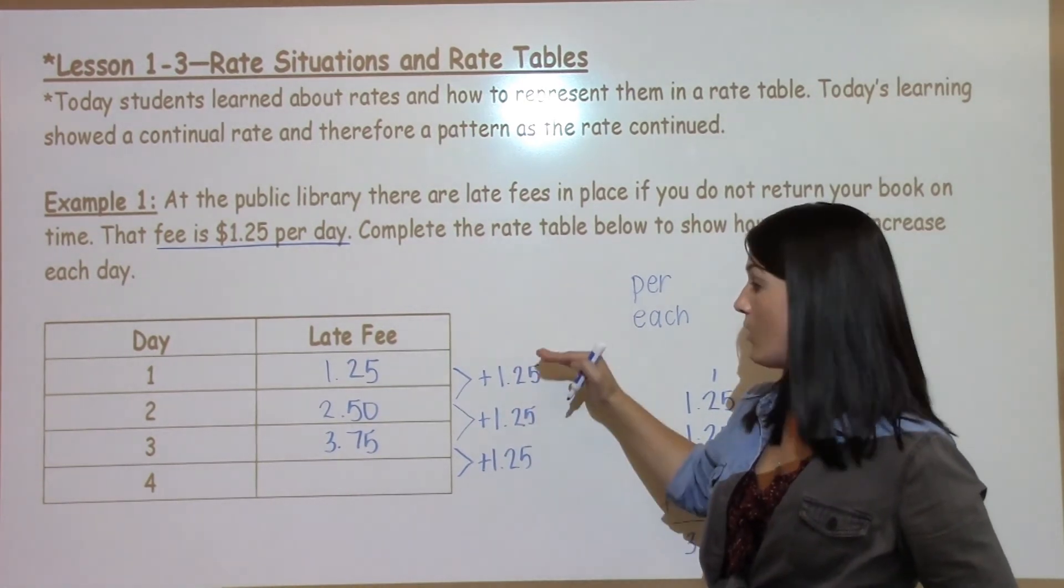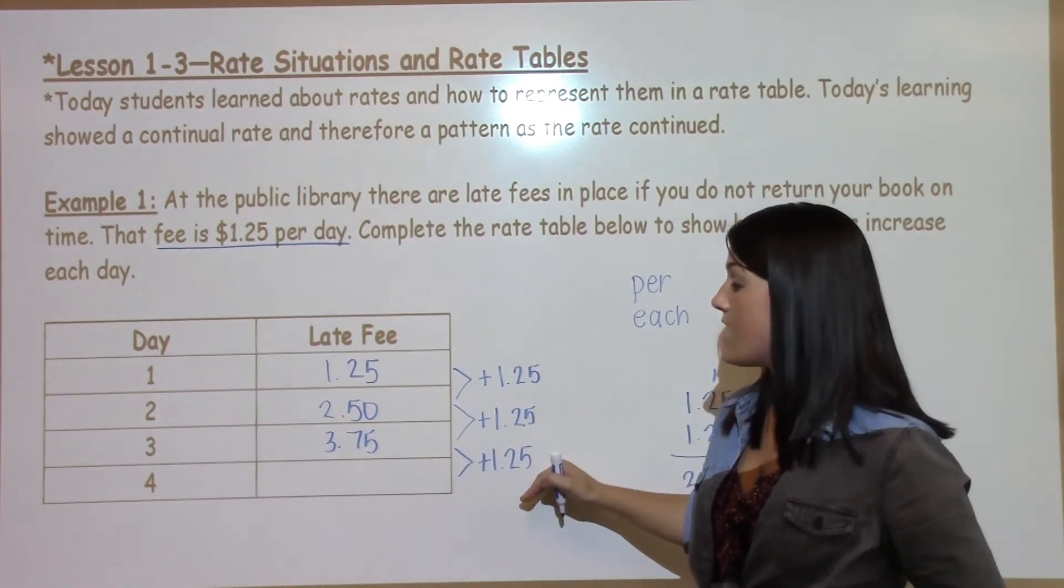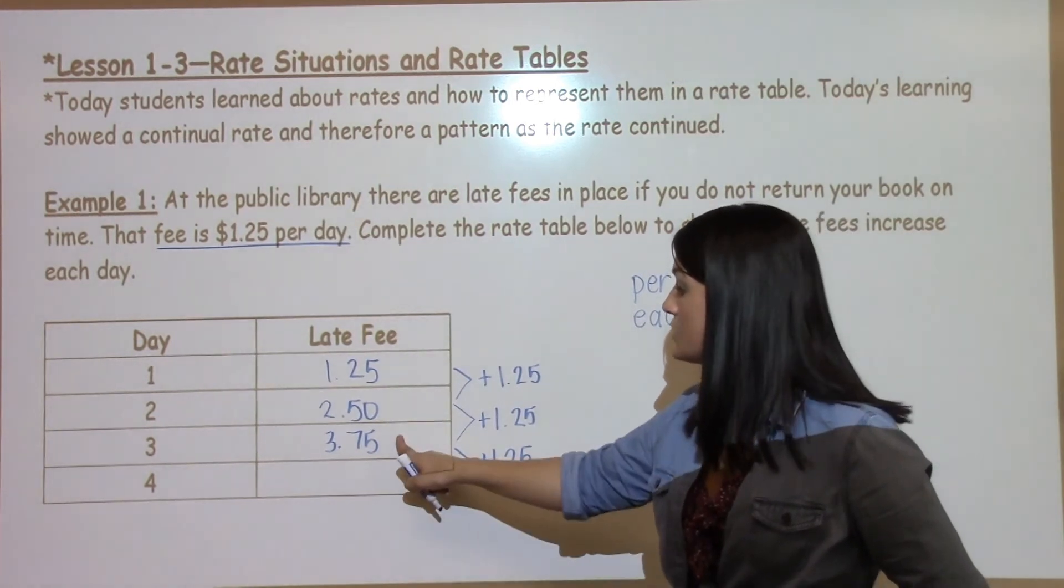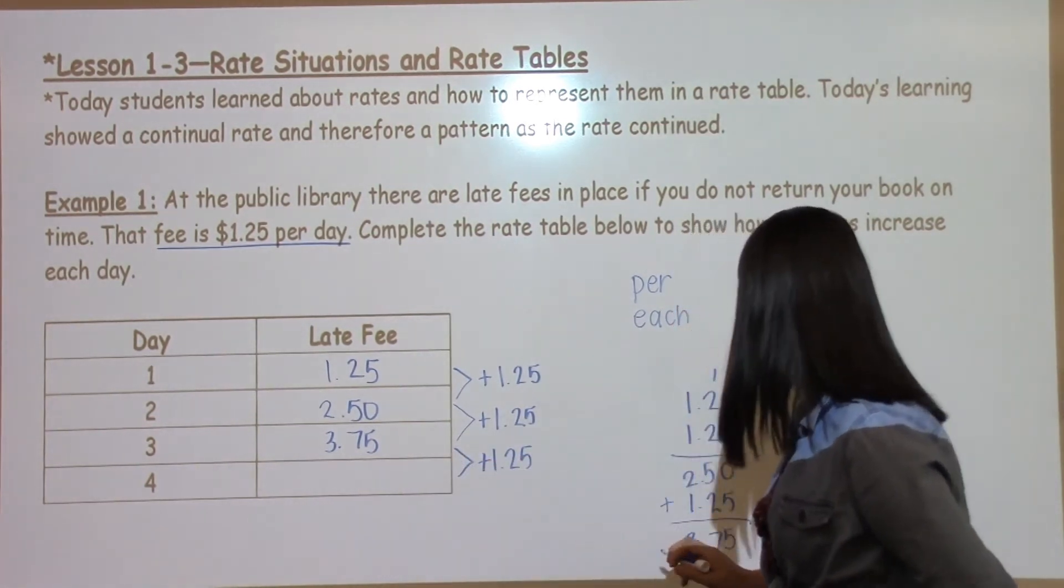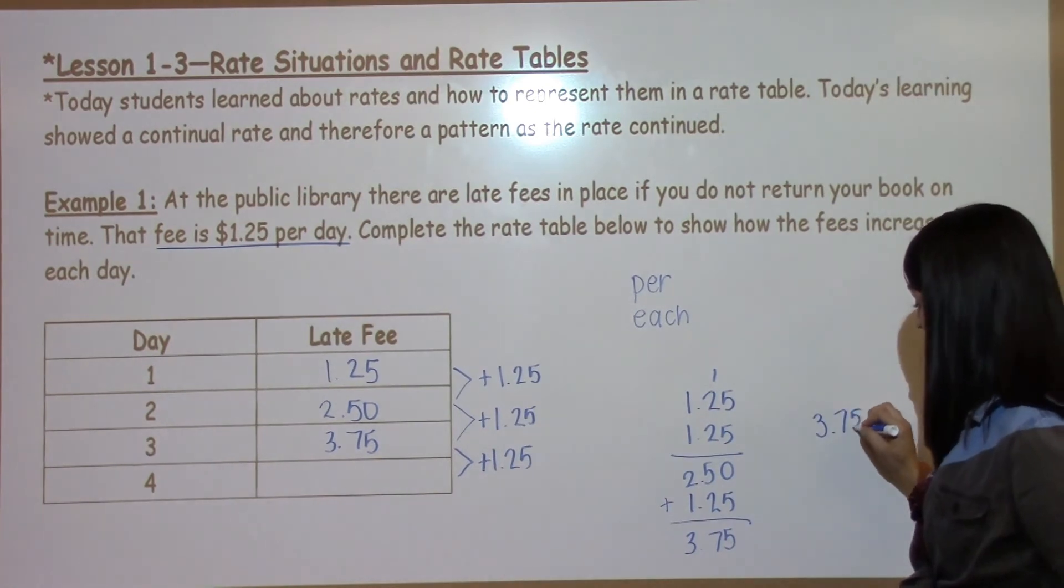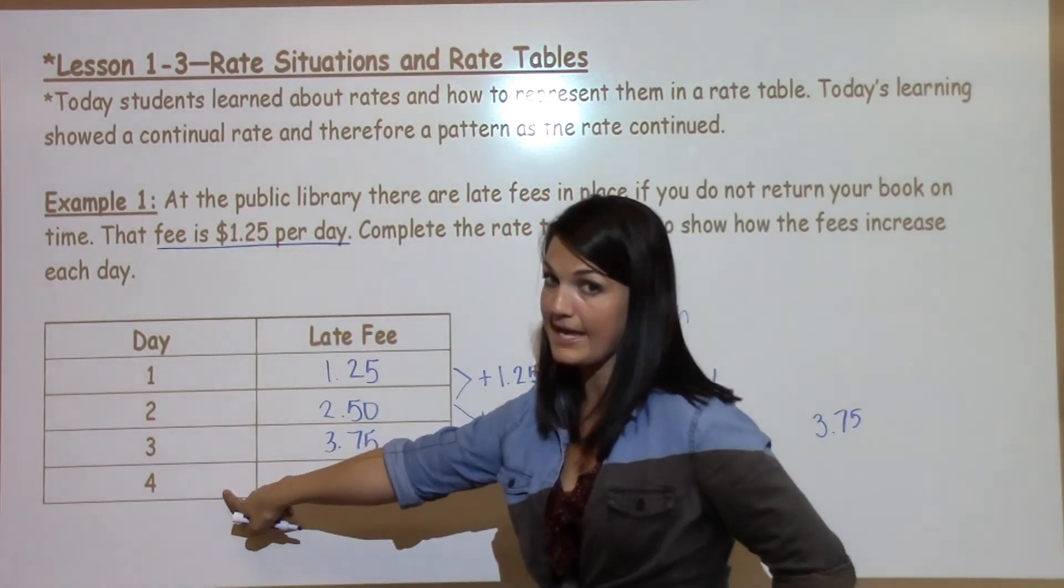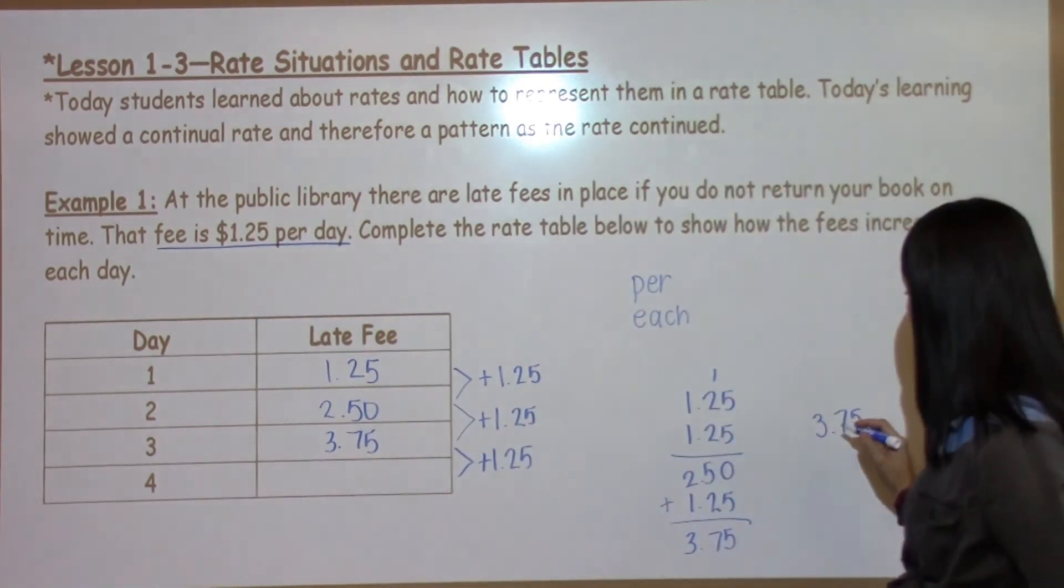That's what we use in a rate table. It's always the same amount from one section of the table to the next. So $3.75 plus $1.25 or you could do $1.25 times 4 because $1.25 is the unit rate.